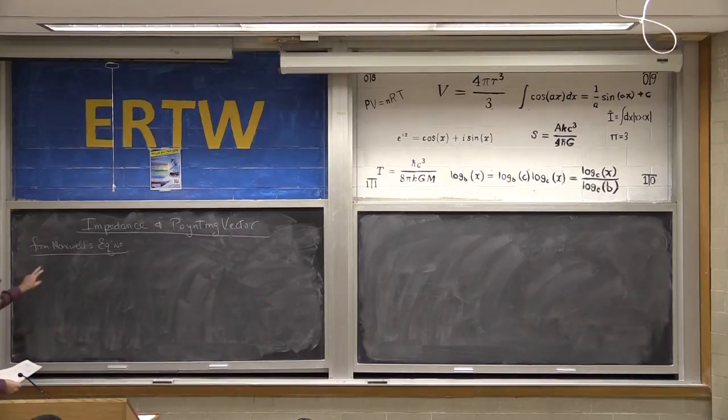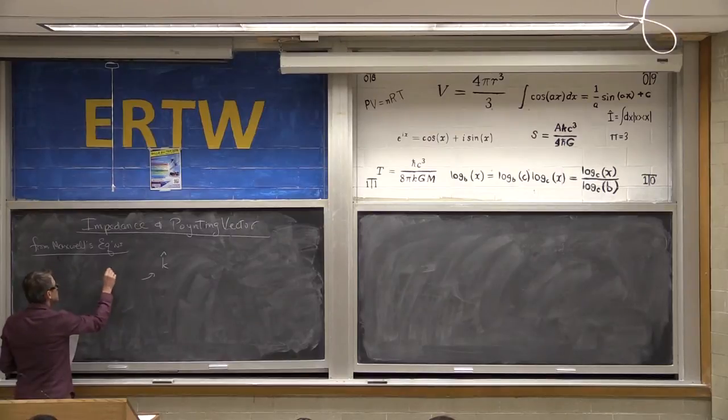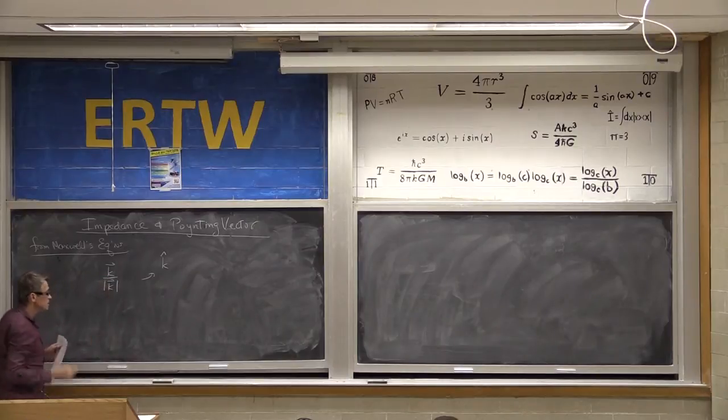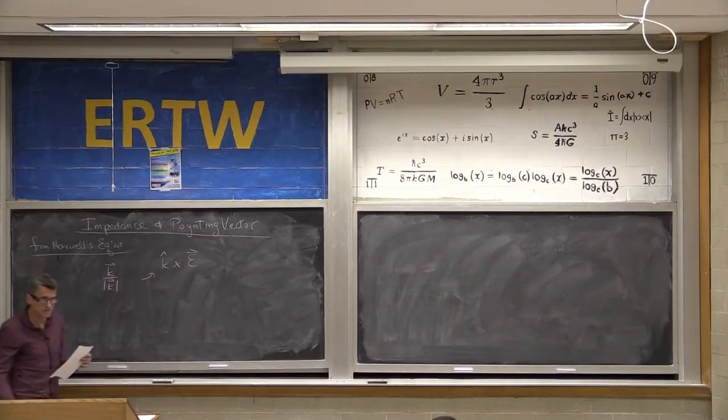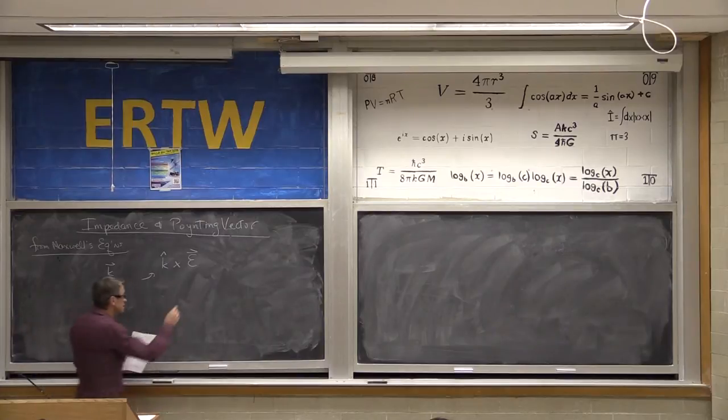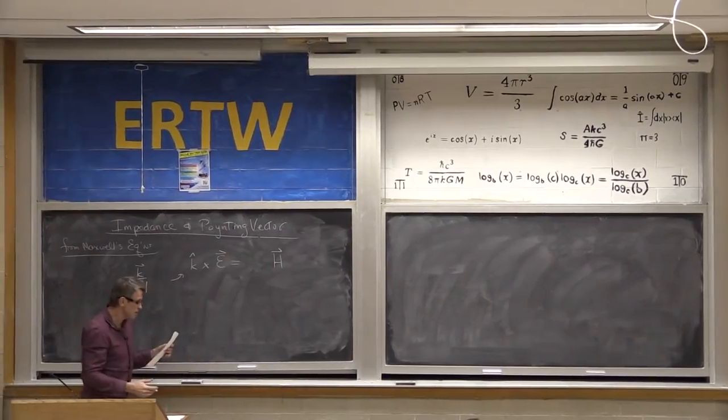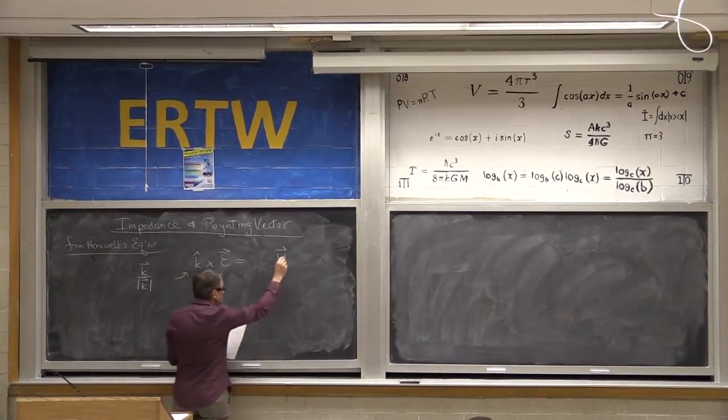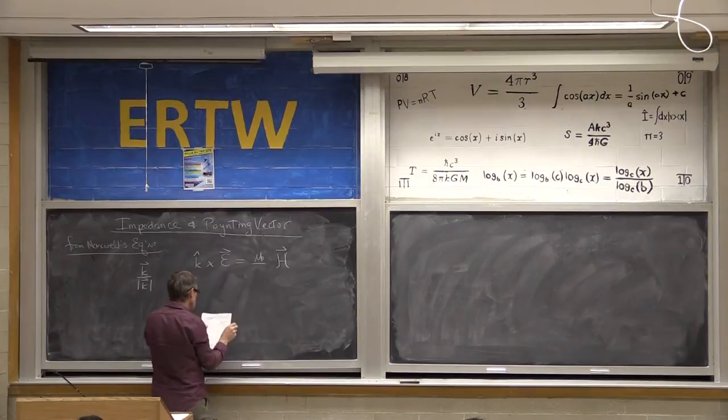One of the results of Maxwell's wave equations is that if we take k hat, this is just the direction of the light propagation. It's k over the magnitude of k. So, it tells us the direction of propagation. And if I cross that with the instantaneous value of electric field, it points in the direction of the magnetic field and the ratios of the magnetic field. That should be the curved version, instantaneous value.